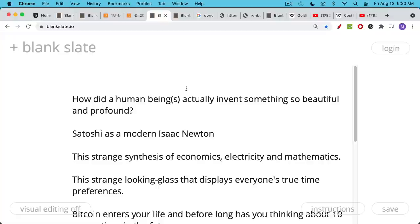I've mentioned this before in the channel, but I often ask myself, how did a human being or multiple human beings actually invent something like Bitcoin, something so beautiful and so profound? You can see Satoshi as a sort of modern Isaac Newton who synthesized many things. Satoshi synthesized economics, the school of Austrian economics and gold, with electricity, mathematics, cryptography.